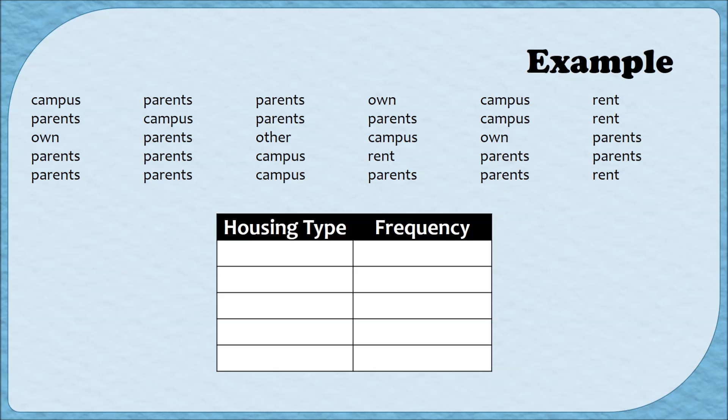Students could live on campus, with their parents, own their own home, rent an apartment, or have some other living arrangement. So I'm just going to list those five different housing types in that first column. It doesn't matter what order I put these in — I can just scan through the data and put them in whatever order I find them.